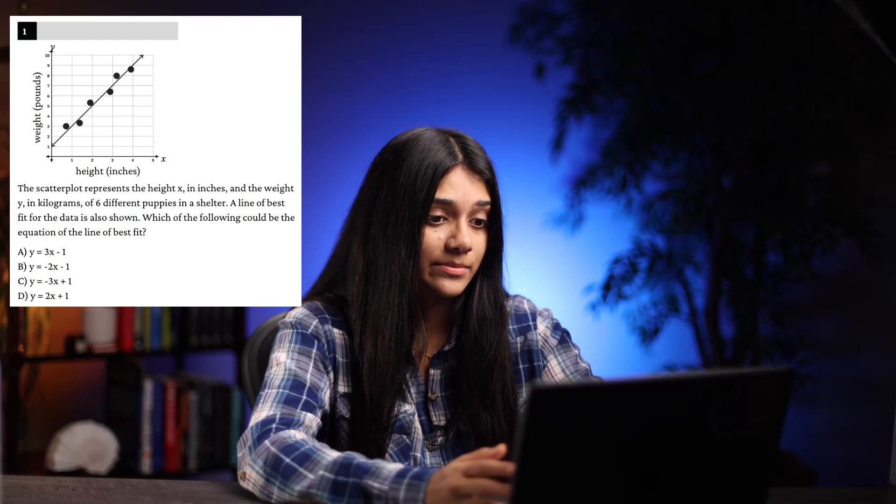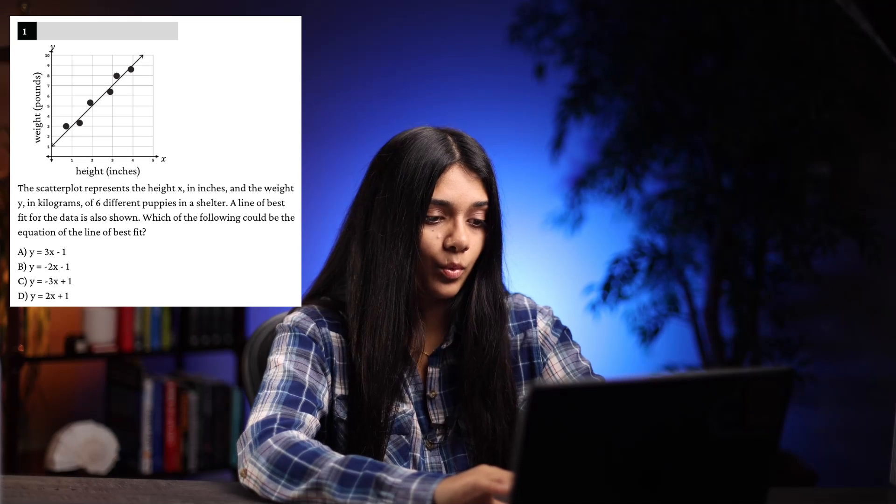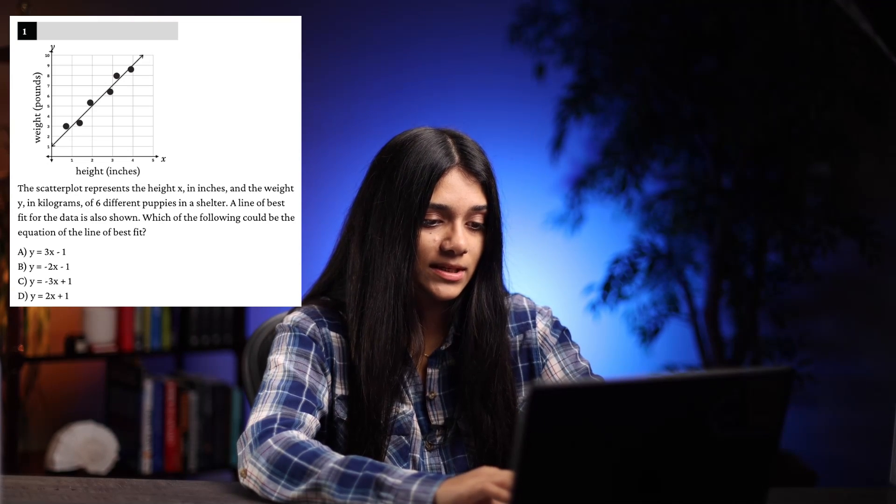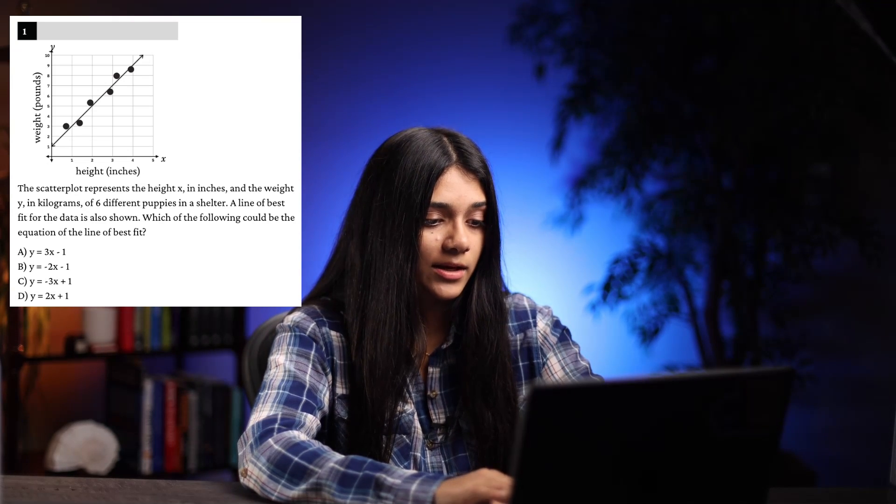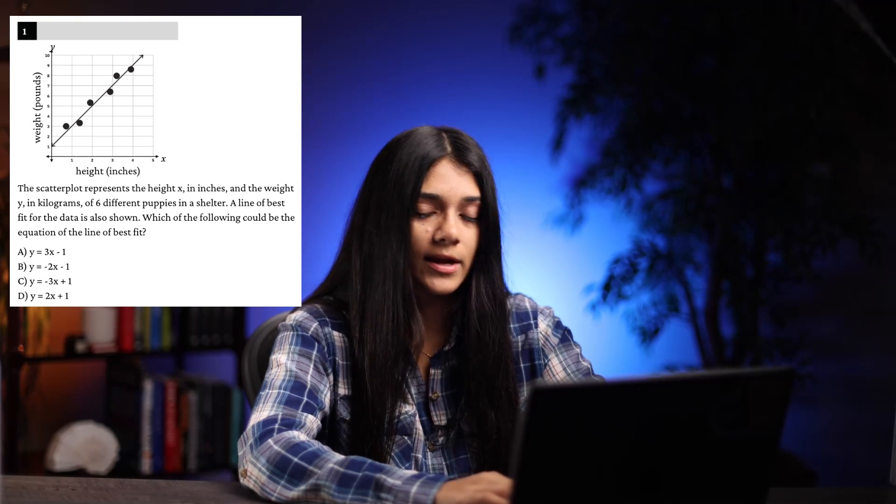Now, with line of best fit questions, we actually have a few use cases for using Desmos. So this question says the scatter plot represents the height X in inches and the weight Y in kilograms of six different puppies in a shelter. A line of best fit for the data is also shown, which of the following could be the equation of the line of best fit?